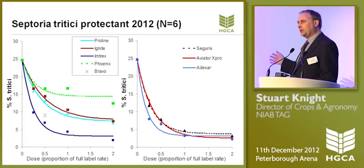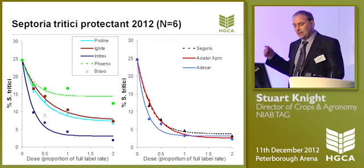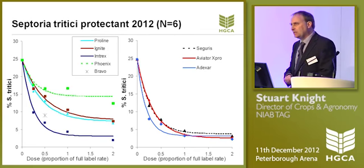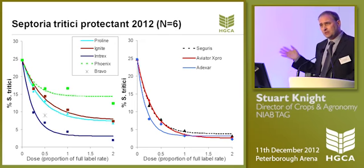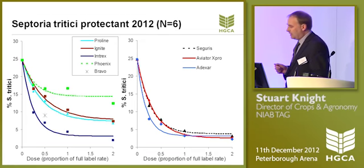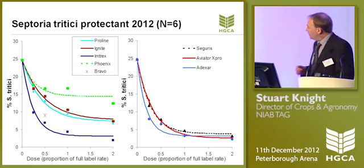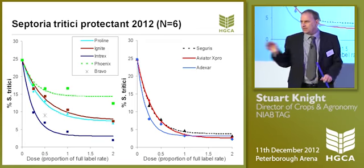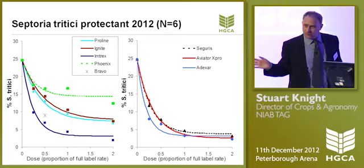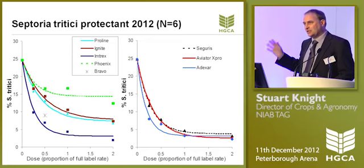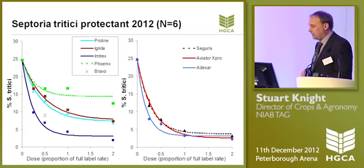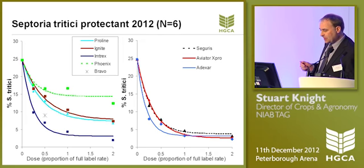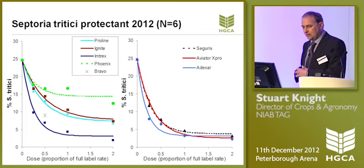Comparing our standards — Proline and Ignite, prothioconazole and epoxiconazole — they give very similar levels of control; you really can't pull the two azoles apart at all. The Phoenix Folpet has reasonably good activity, bearing in mind it's designed to be used in mixtures, not on its own. Interestingly, although we only had one point for Bravo — a half dose — you can see just how effective a half dose of chlorothalonil still is in a protective septoria situation, reinforcing the value of chlorothalonil in septoria programs. At the half-dose point it was better for protection than either of the two azole standards. The straight SDHI fluxapyroxad gives a very good level of septoria protection, superior to any single azole.